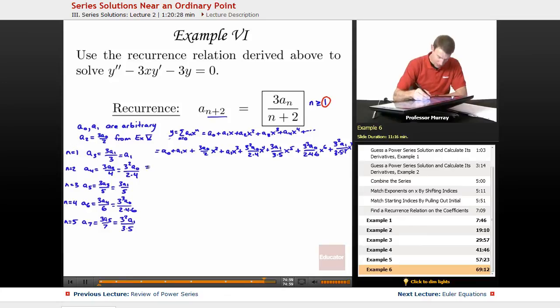Again, we can segregate out the A0 terms and the A1 terms. A0, it looks like we've got 1 plus 3 halves X squared, plus 3 squared over 2 times 4 X to the 4th, plus 3 cubed over 2 times 4 times 6 X to the 6th.